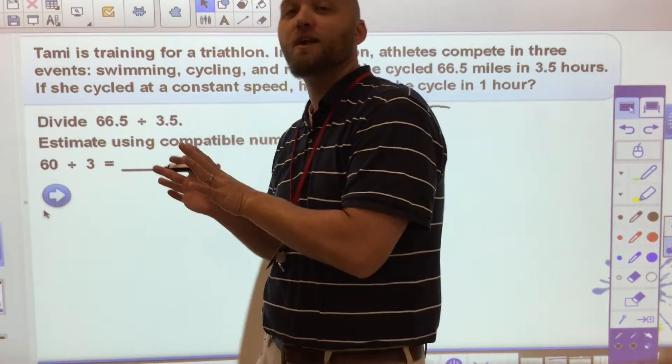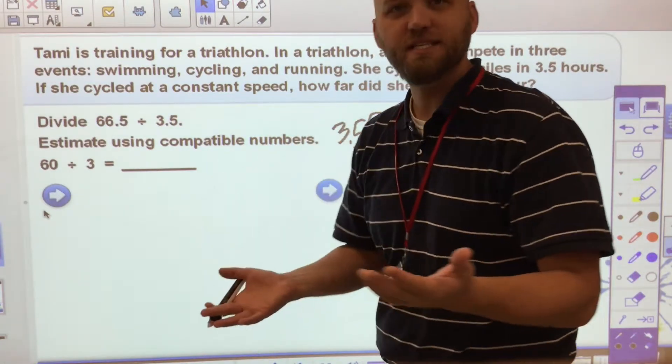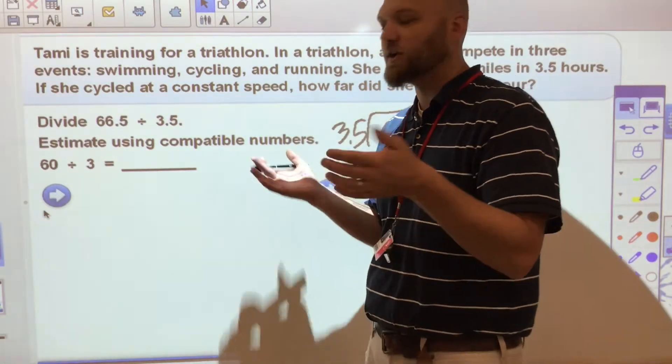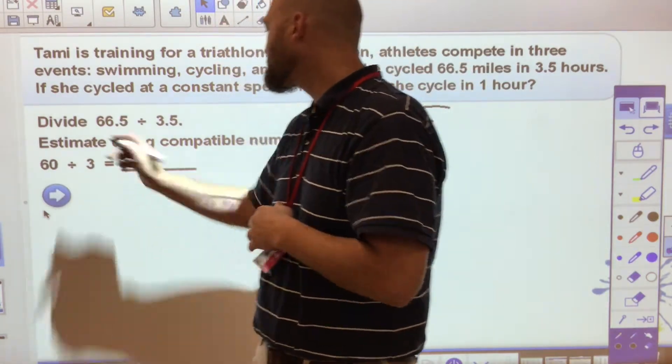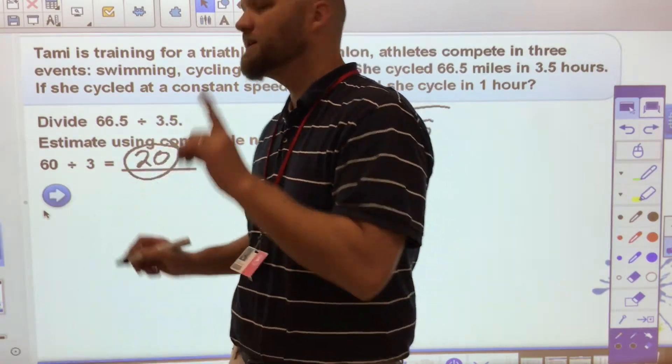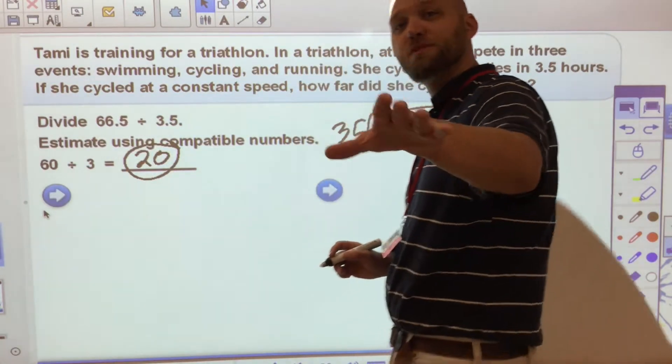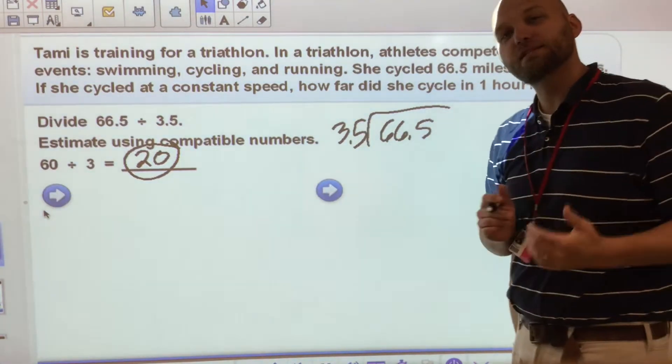I know that that is not our normal procedure because we would normally round it up to 67. 67 is not easily divided by 3. So they're trying to make it a little helpful for us. We're just getting a ballpark. So 60 divided by 3 gives me 20. So my estimate is 20. My answer should be somewhere in the ballpark of 20.